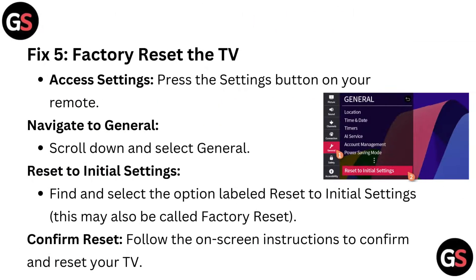Fix 5: Factory reset the TV. Press the settings button on your remote and scroll down to select General. Find and select the option labeled Reset to Initial Settings — this may also be called Factory Reset. Follow the on-screen instructions to confirm and reset your TV.